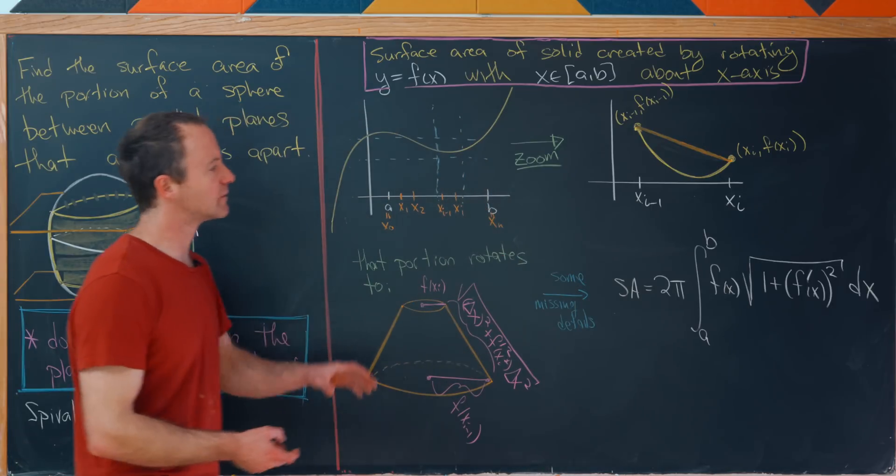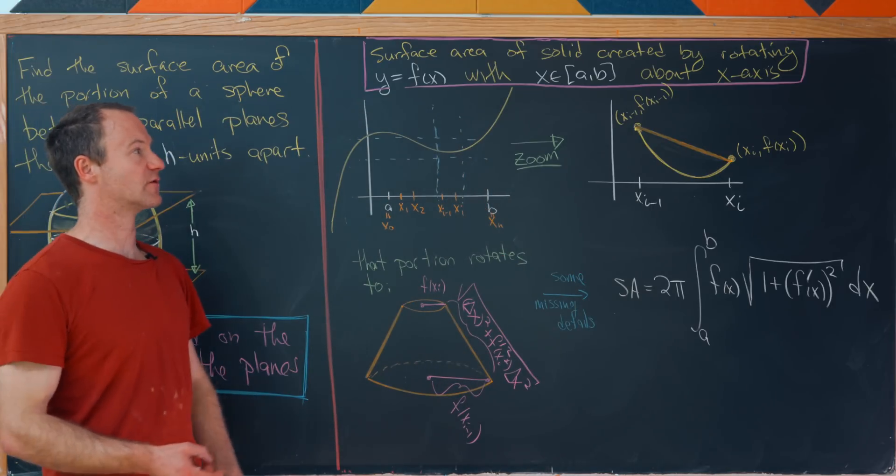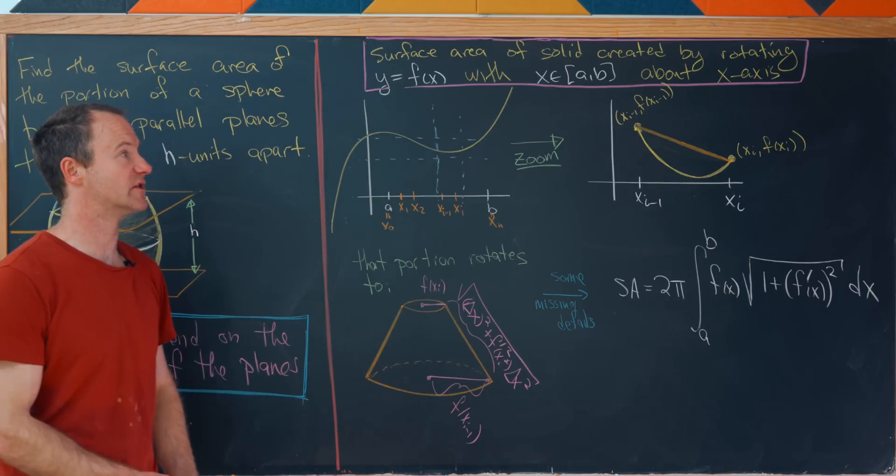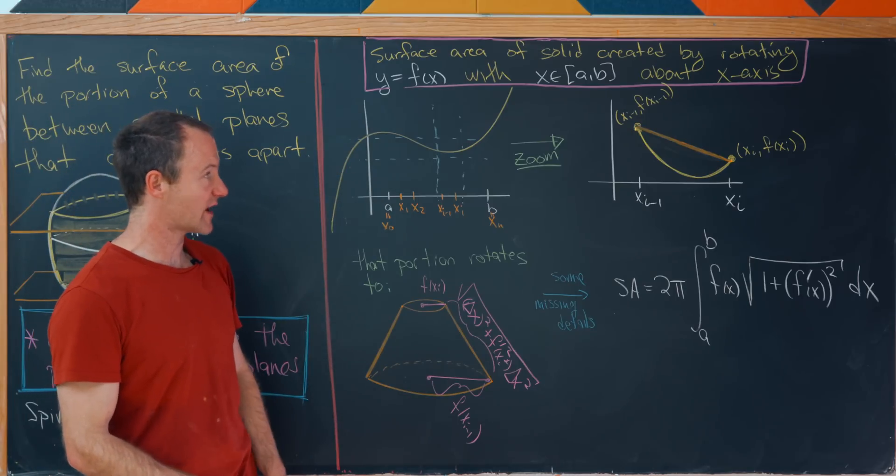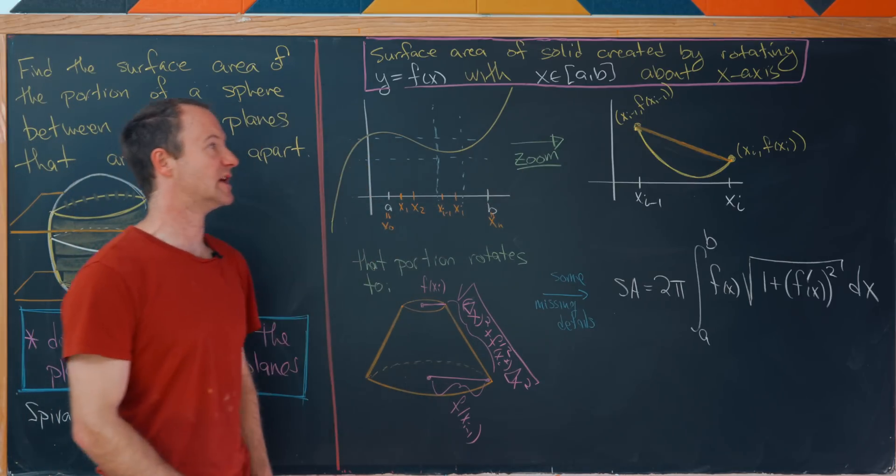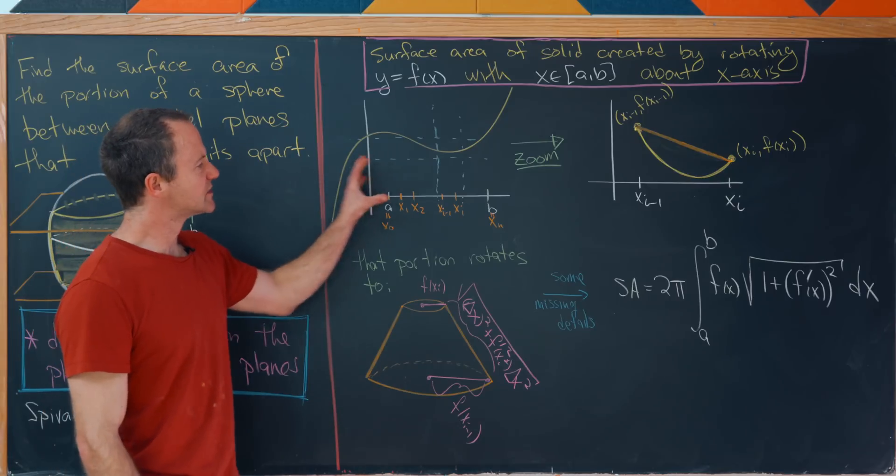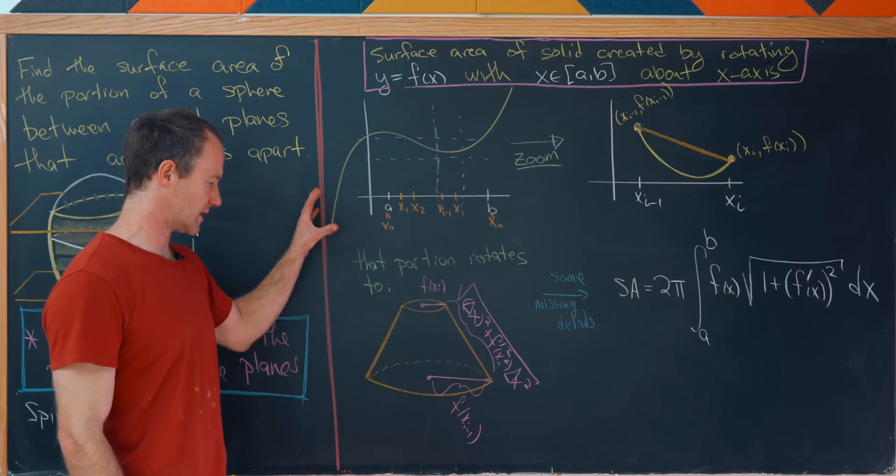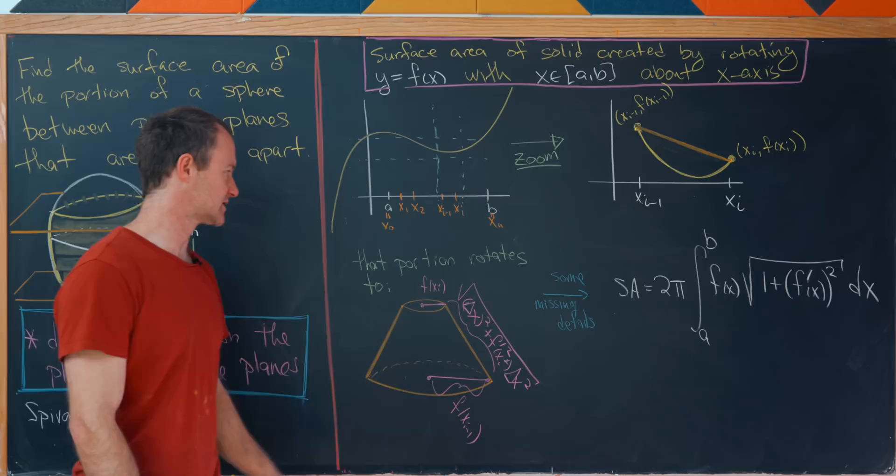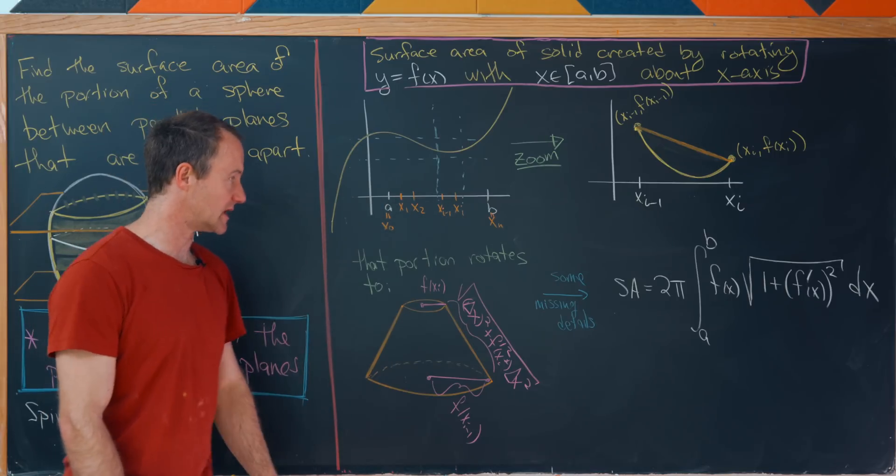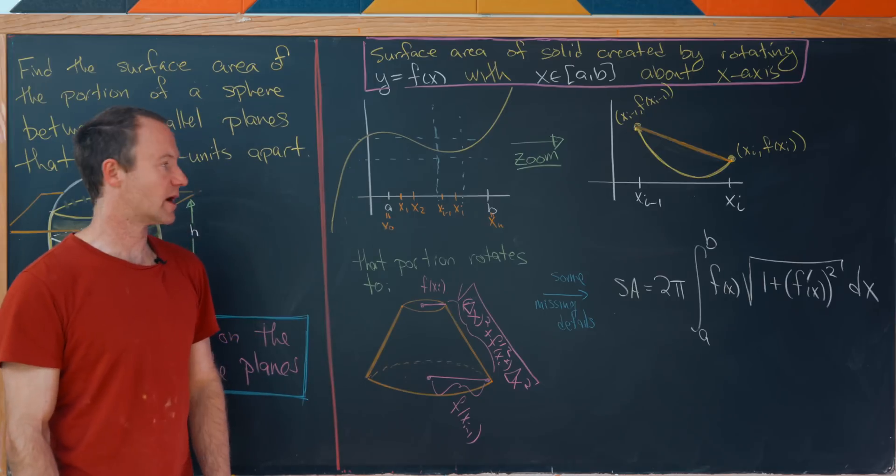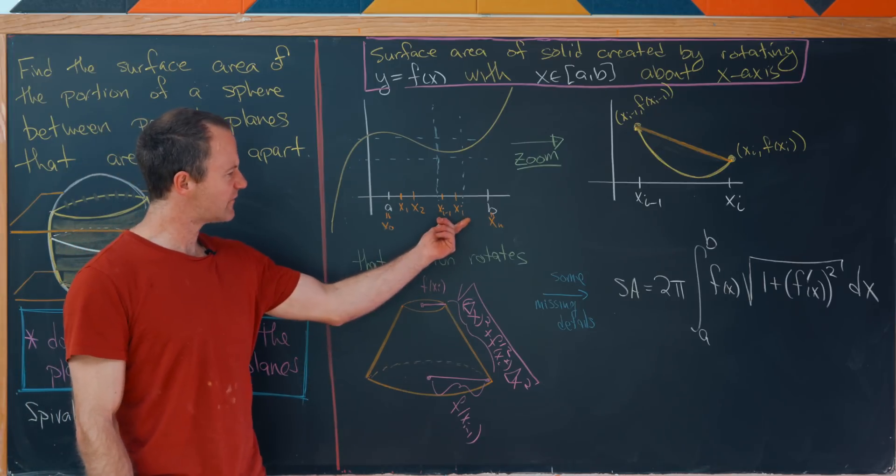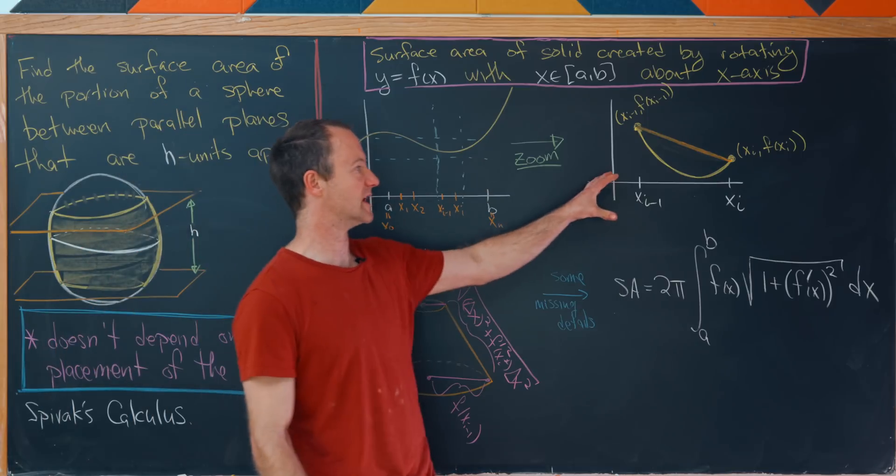So what's our major tool here? Well, it's going to be solids of revolution and finding the surface area of a solid created by rotating a curve Y equals F of X where X comes between A and B about the X axis. So here's a sketch of what's going on here. I have my curve Y equals F of X between A and B. And then I want to split this region from A to B into N subintervals. And then we're going to focus on the ith subinterval between XI minus 1 and XI and let's zoom in.